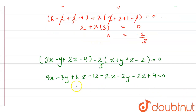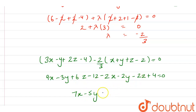Solving further: 9x minus 2x is 7x, minus 3y minus 2y is minus 5y, 6z minus 2z is plus 4z, and minus 12 plus 4 is minus 8, equals 0. So the final answer is 7x minus 5y plus 4z minus 8 equals 0.